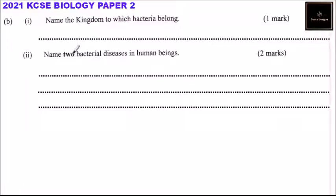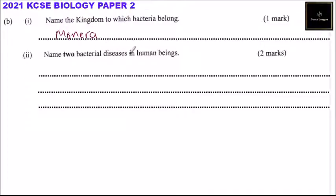Moving to the next part of the question: Roman numeral one asks you to name the kingdom to which bacteria belong. Bacteria are microscopic single-celled organisms. They belong to the kingdom known as Monera. Roman numeral two asks you to name two bacterial diseases in humans.